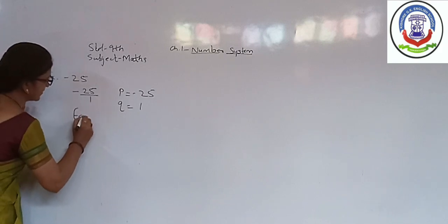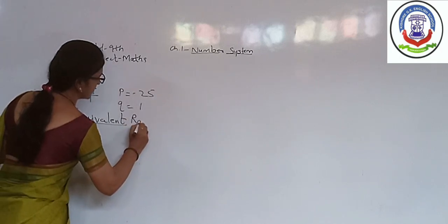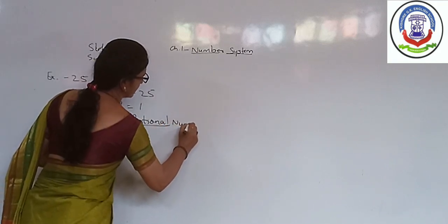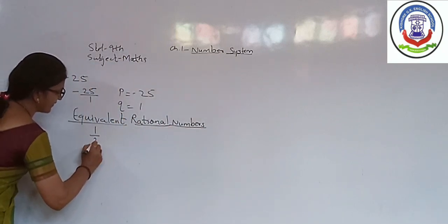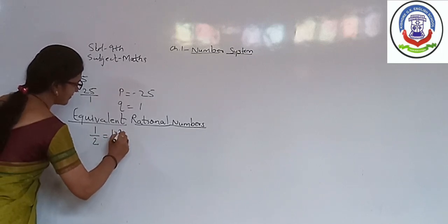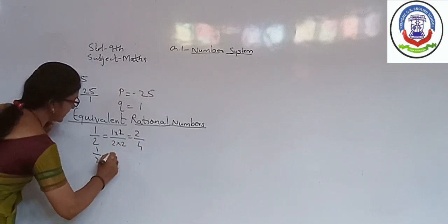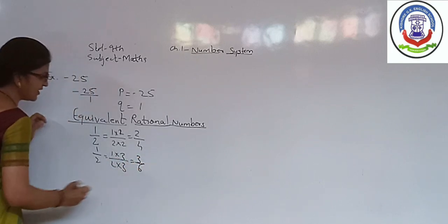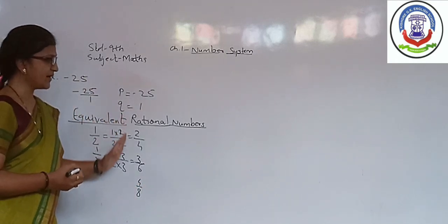Equivalent Rational Number. Suppose we take the example of half. This can be converted into equivalent rational number by multiplying by 2 by 2, that is 2 by 4. If we multiply it by 3 by 3, then it is converted into 3 by 6. Similarly, we can convert it into 4 by 8, etc. Such numbers are known as equivalent rational numbers.